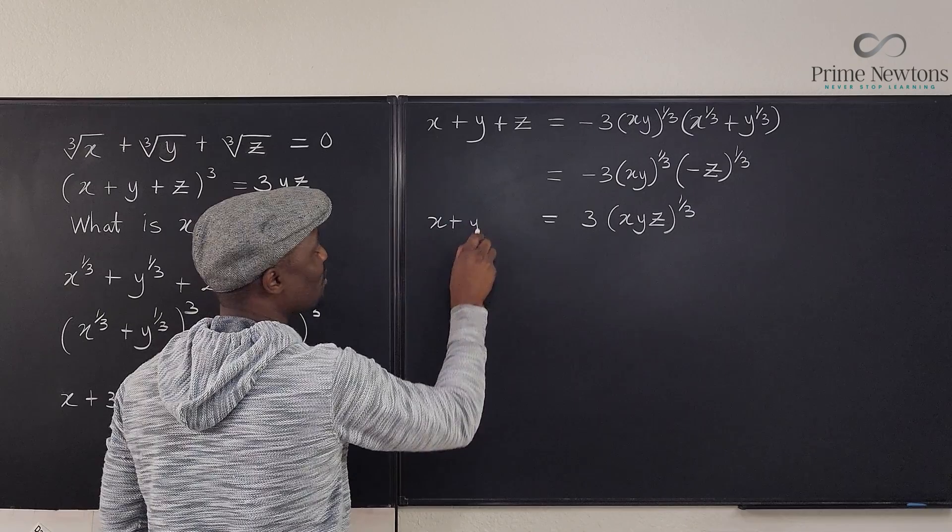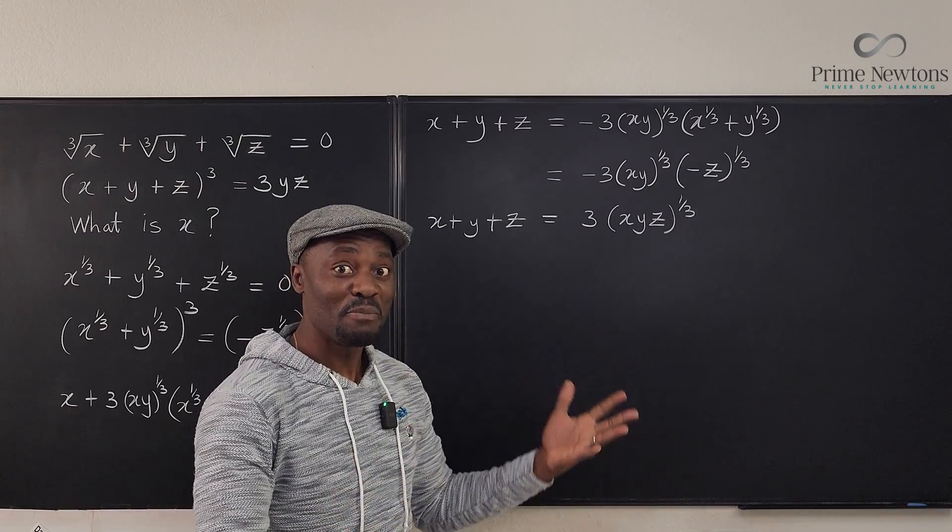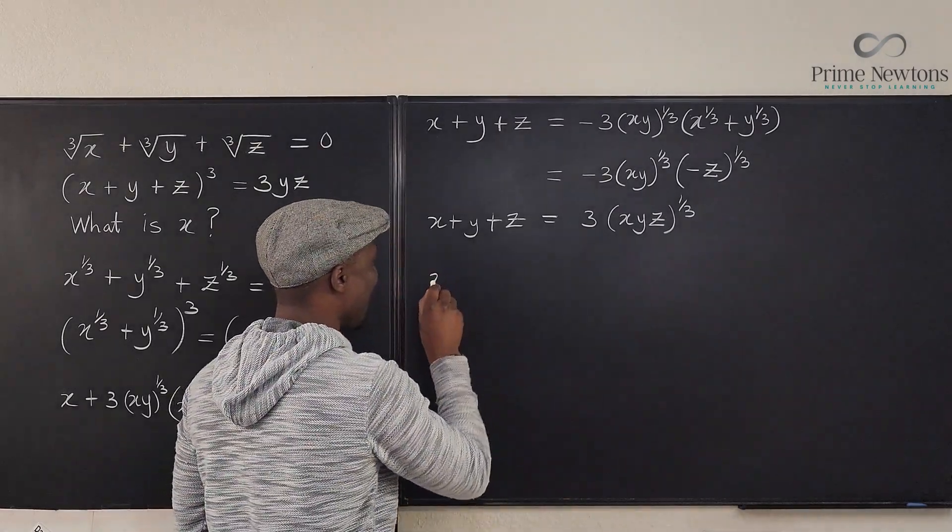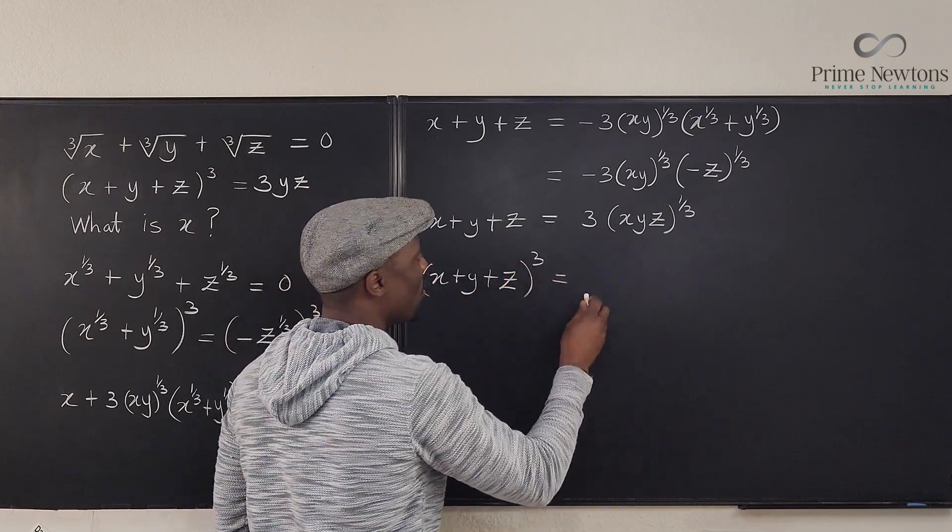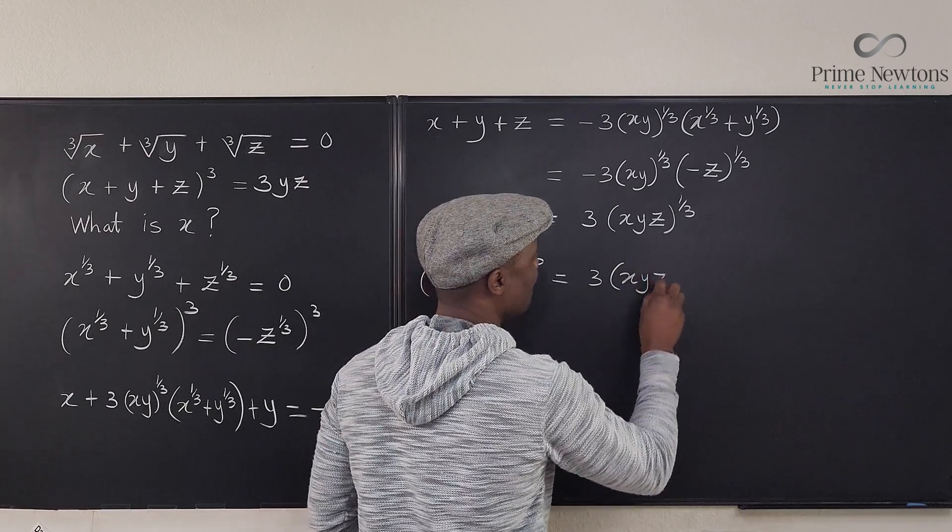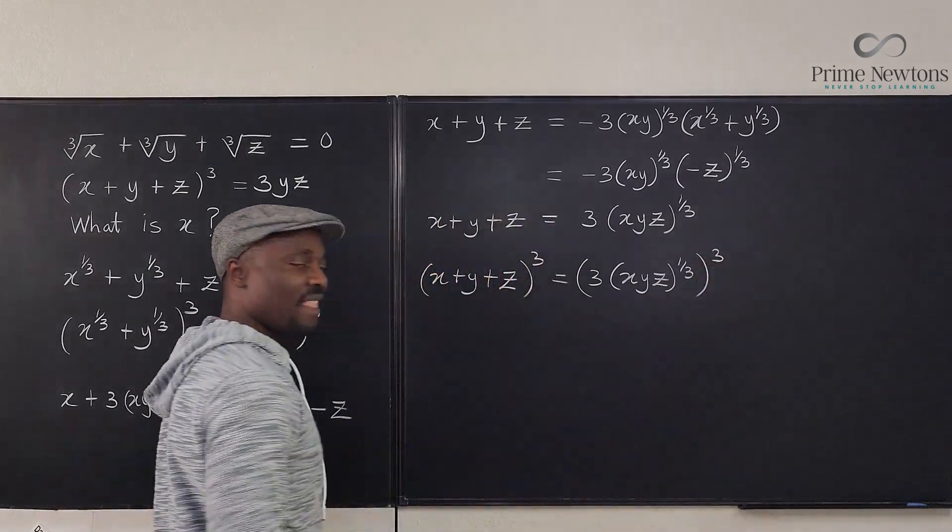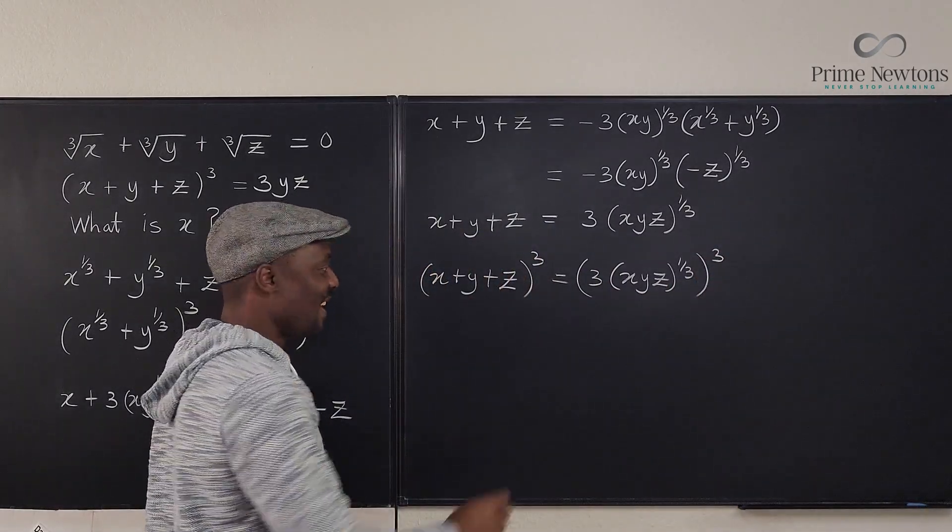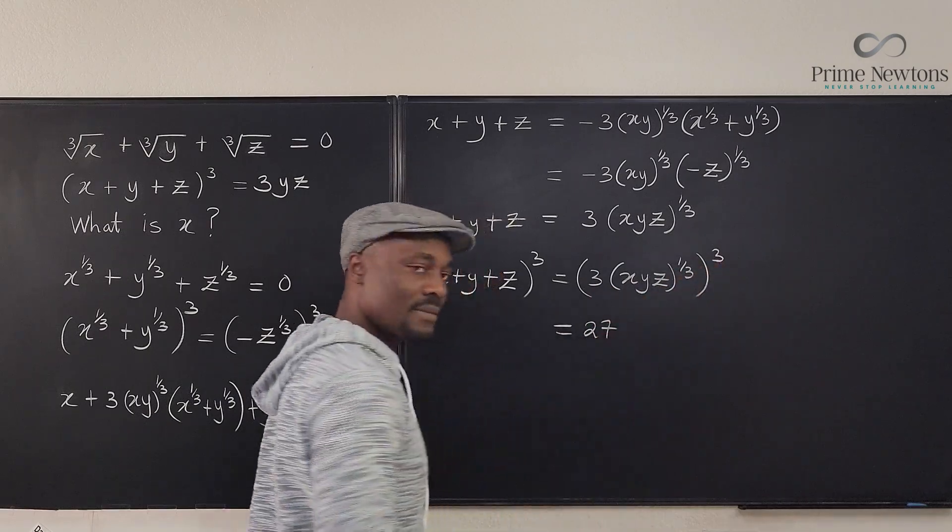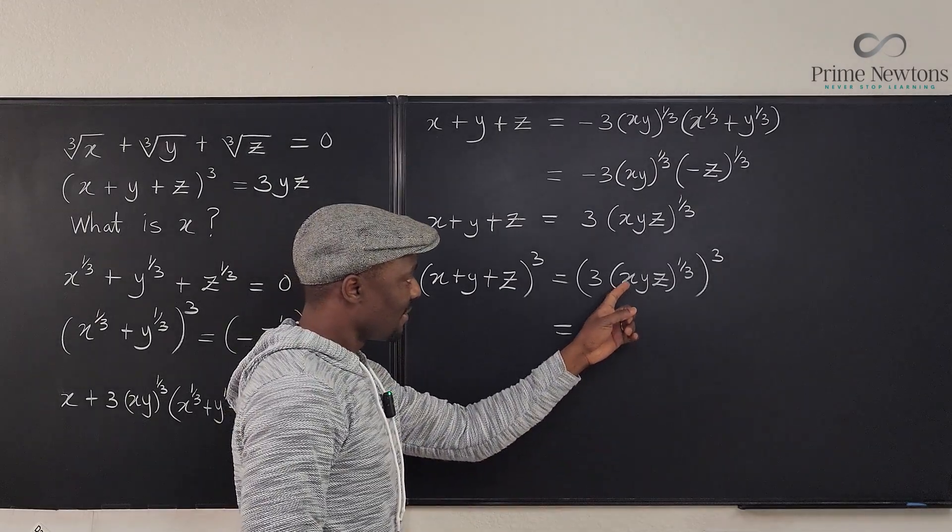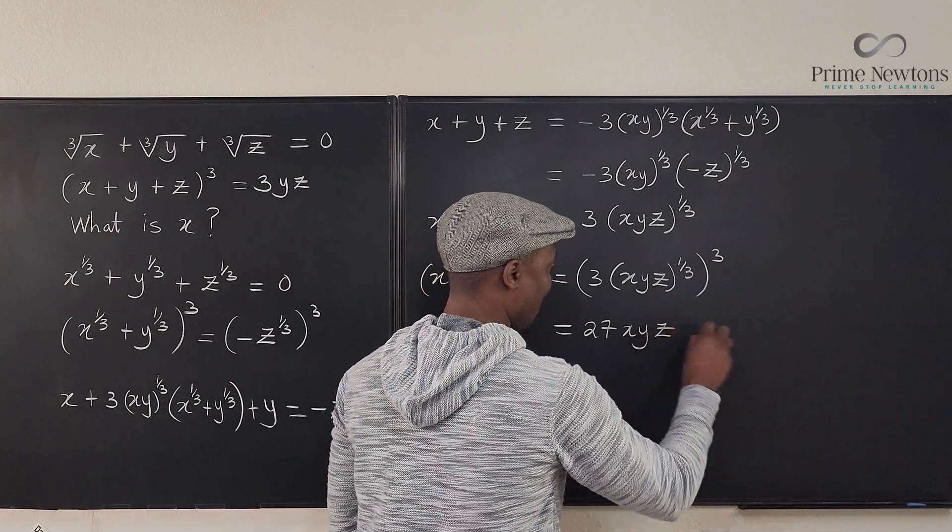And this is x plus y plus z. So now I can cube both sides. So I got x plus y plus z all cubed will be three times xyz to the one third cubed. And what do I get? Well, three cubed is 27. And this cube gets rid of this. So it's just 27xyz. Nice.